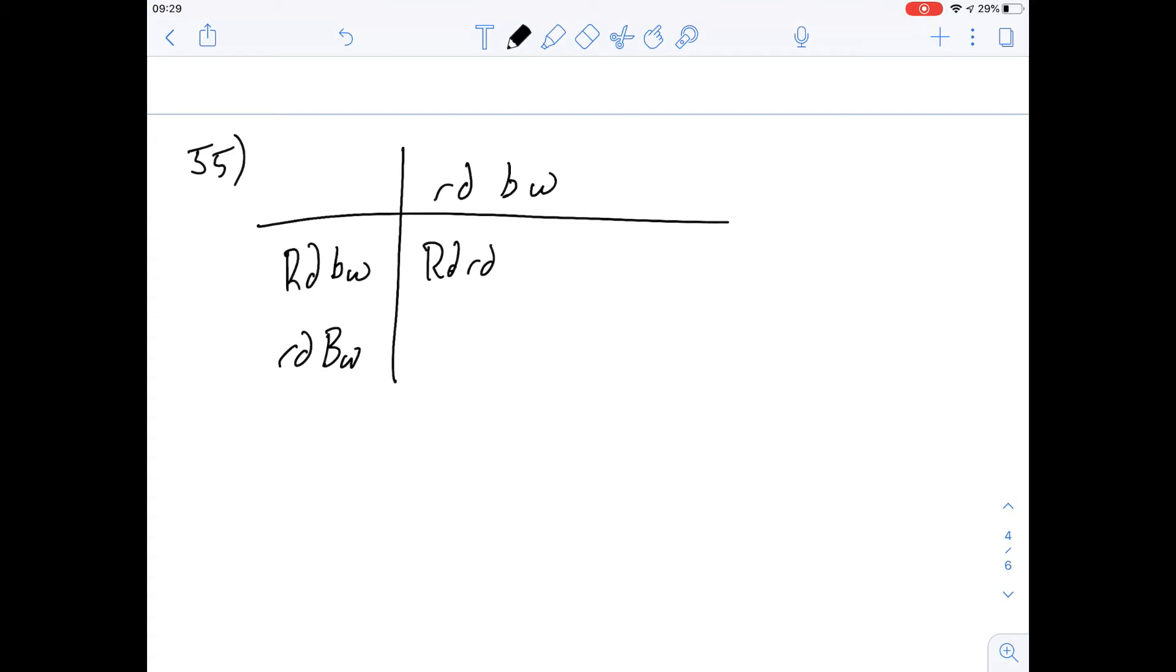So what are the two options then once we do our cross? That's our first. And then the next is going to be homozygous recessive for red and then heterozygous for brown.